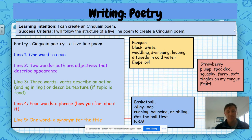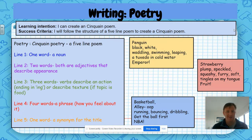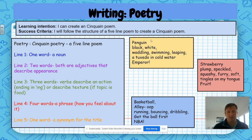A cinquain poem is just a five-line poem where you're describing a topic. Line one is a noun, which is the topic. So let's use the example of the penguin here — a noun is penguin, so penguin goes at the top; that's our topic.